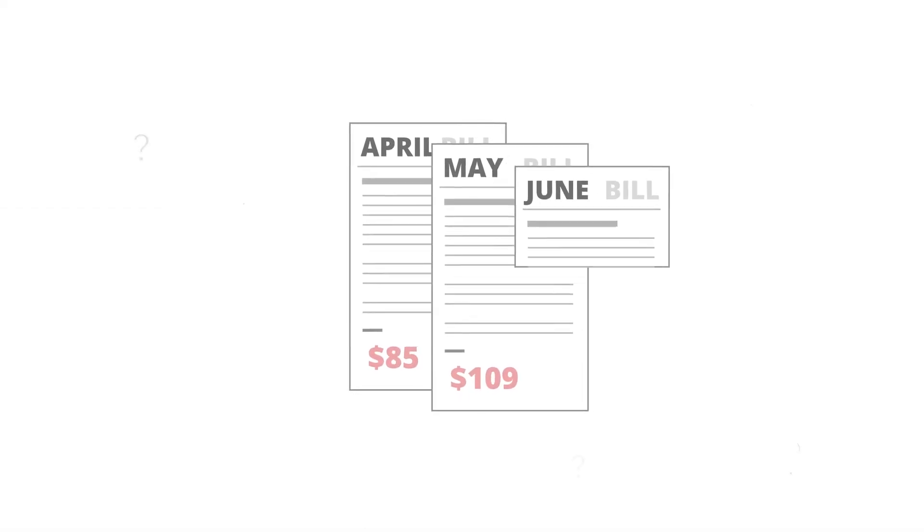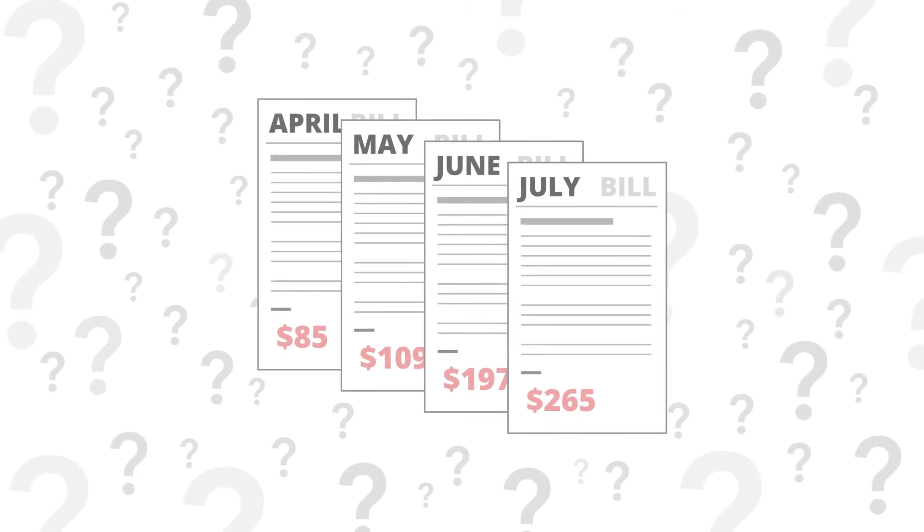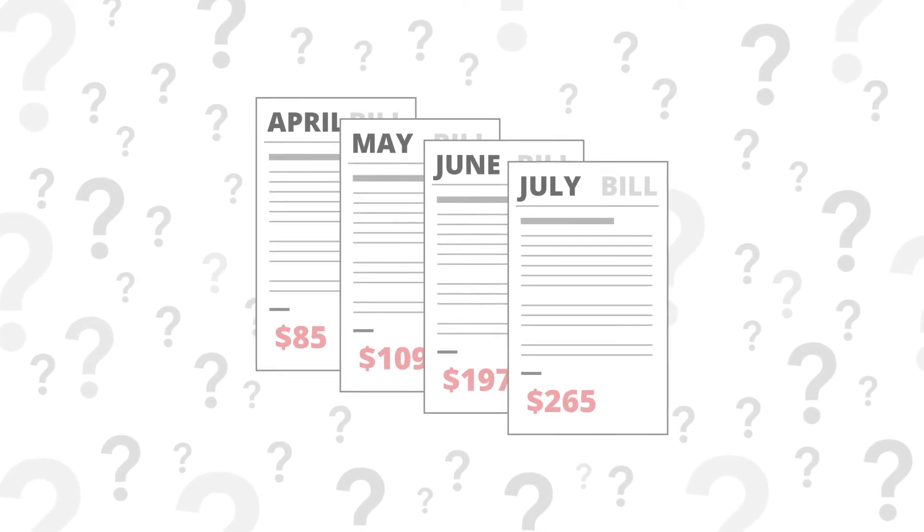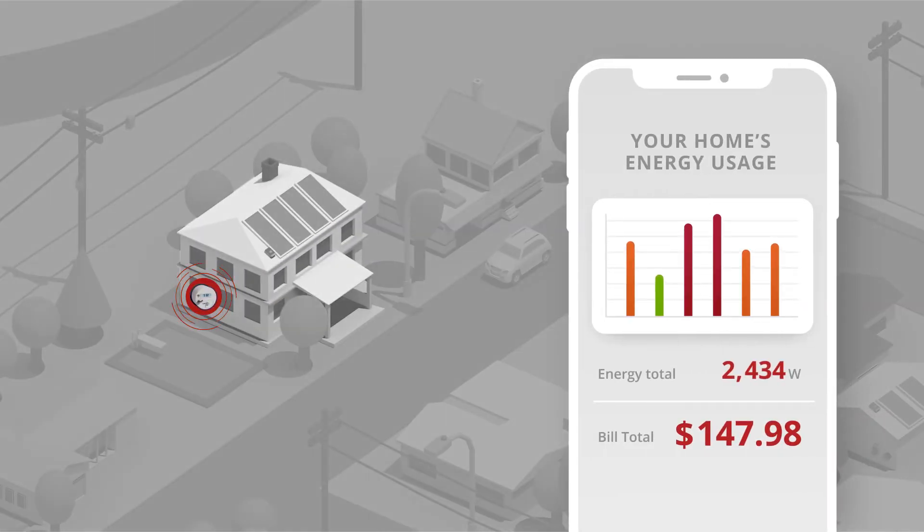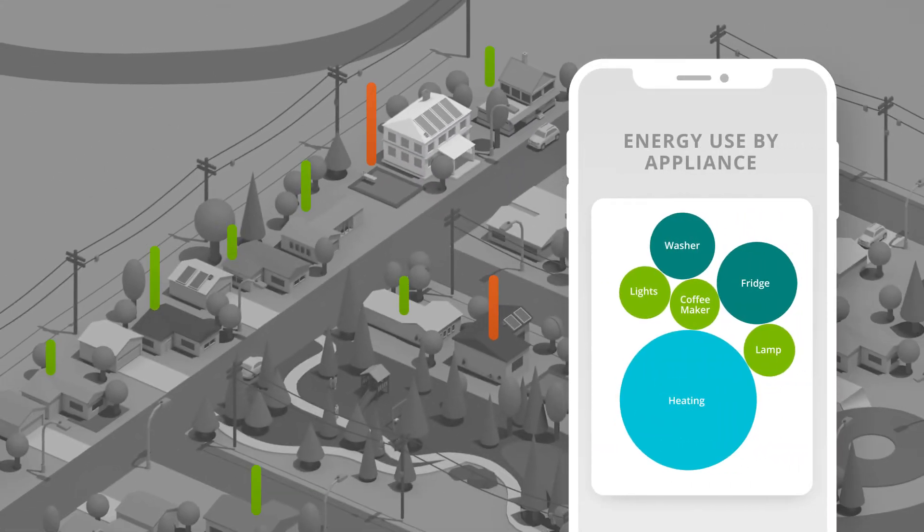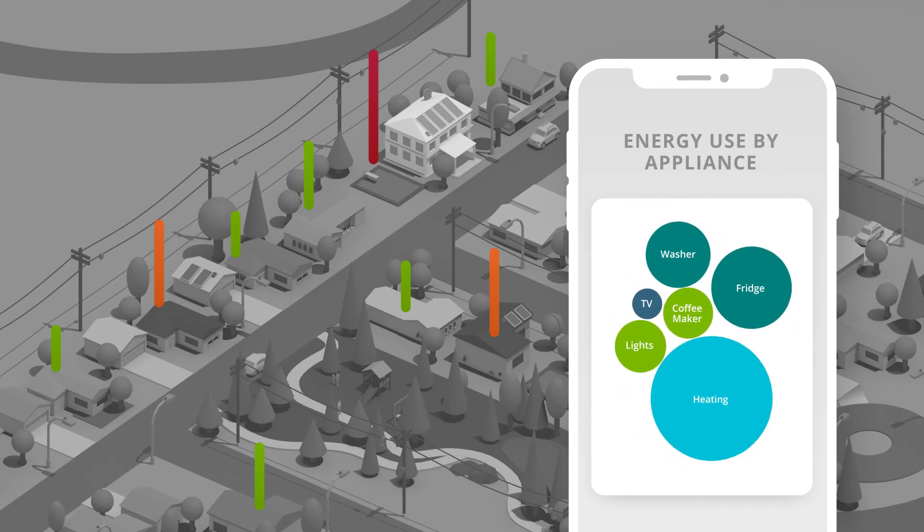In the past, infrequent availability of energy and spend information prevented consumers from proactively managing their usage. Now, Ravello gives consumers a clear picture of their energy usage including when and how each appliance uses energy and how this impacts their overall bill.